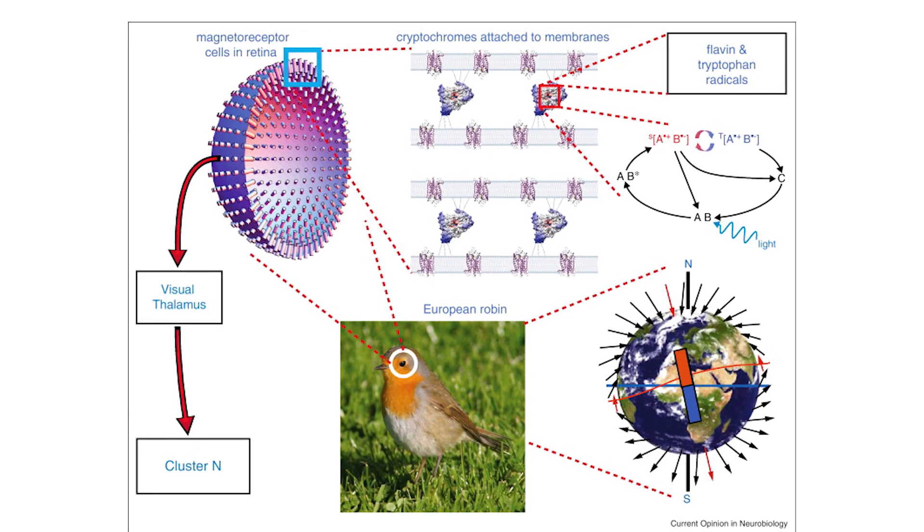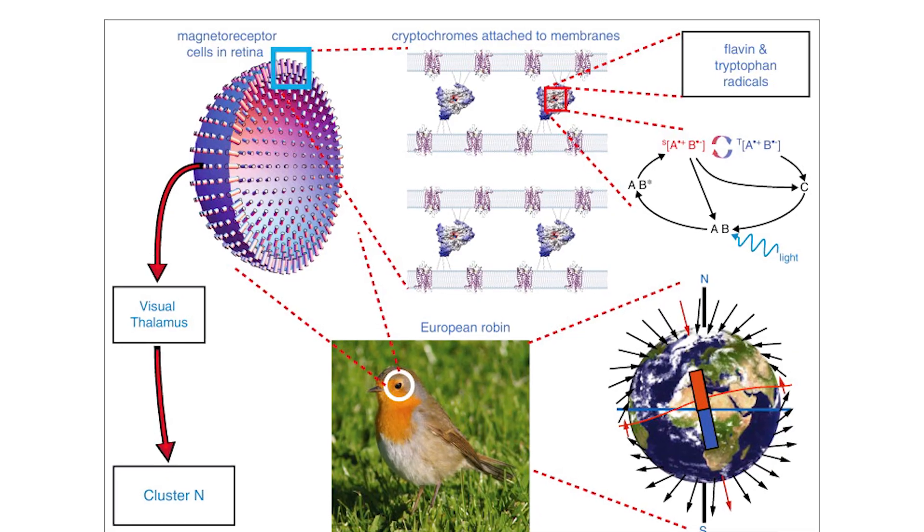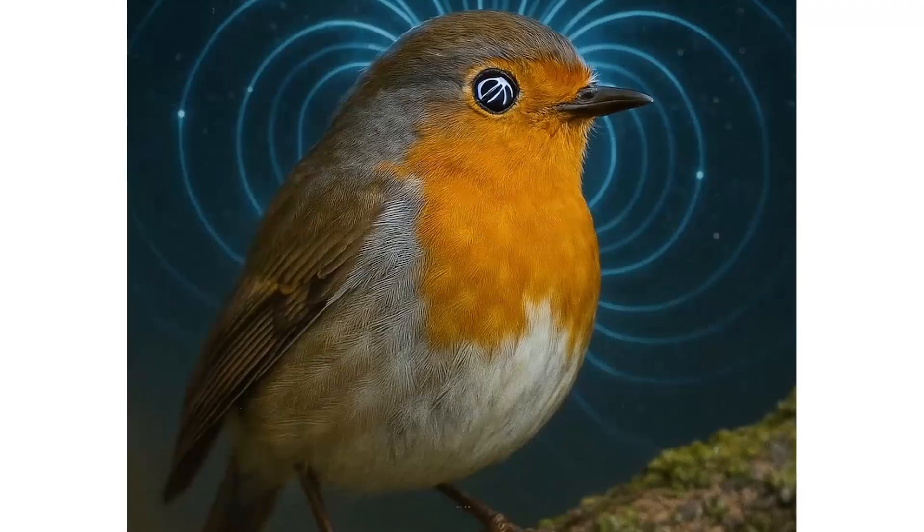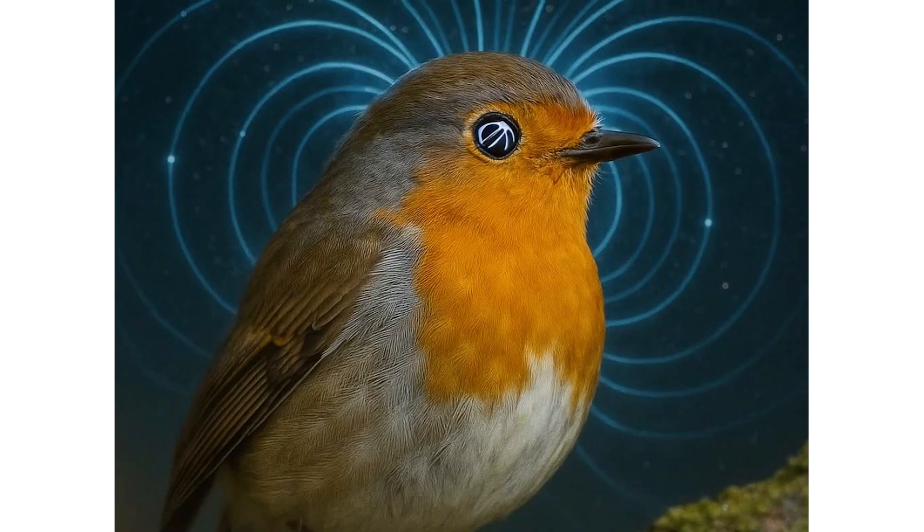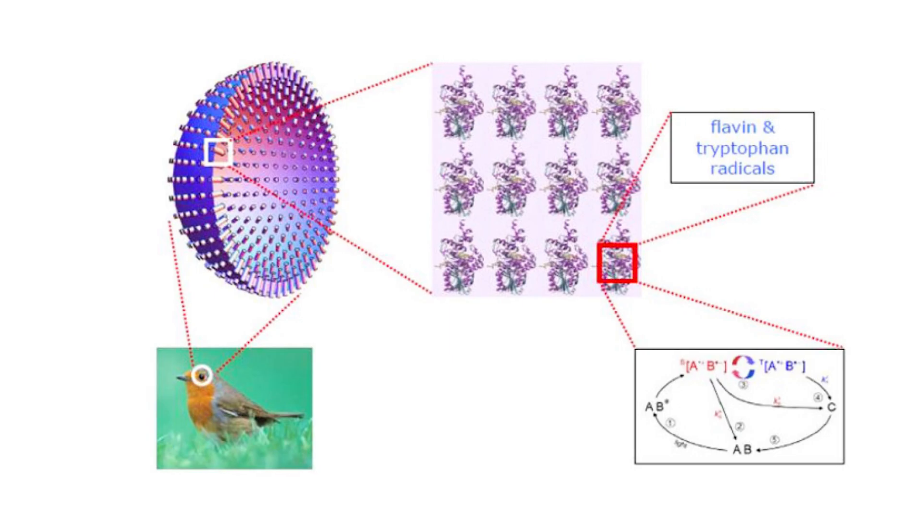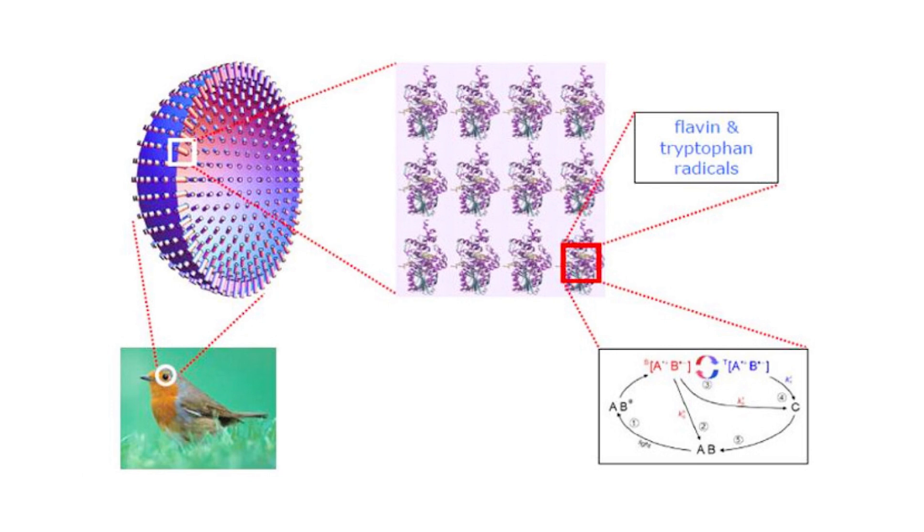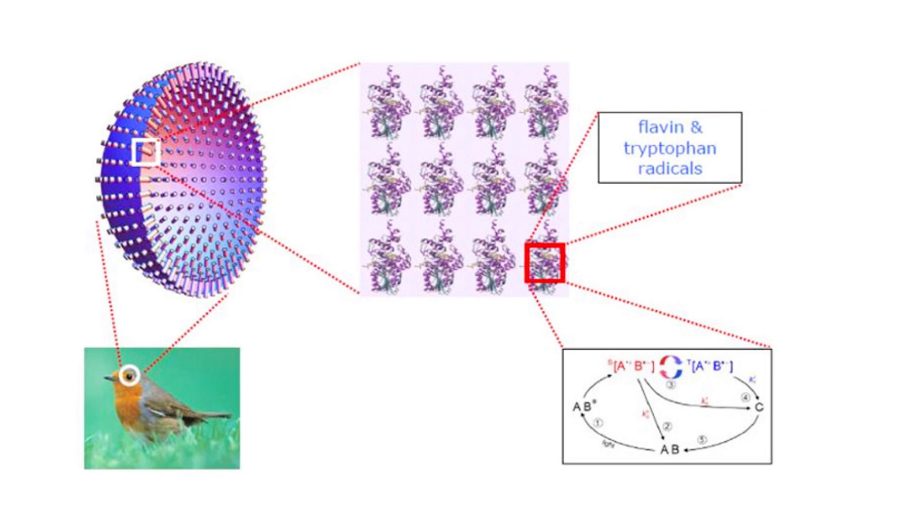The leading explanation involves a protein called cryptochrome found in the birds' retinas. When blue light strikes this protein, it creates a pair of quantum entangled electrons that are sensitive to magnetic fields. This process, known as the radical pair mechanism, works like this.